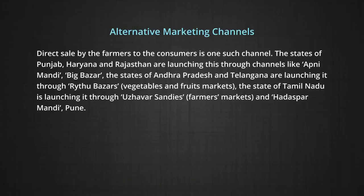What are the alternative marketing channels emerging in India? Alternative channels of agricultural marketing are a ray of hope to small and marginal farmers who have been suffering at the hands of middlemen. Direct sale by farmers to consumers is one such channel. The states of Punjab, Haryana and Rajasthan are launching this through channels like Apni Mandi and Big Bazaar. Andhra Pradesh and Telangana are launching it through Rythu Bazaars, that is vegetables and fruit markets.